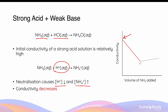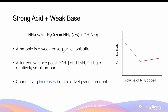When the titration reaches the equivalence point — when all the hydrogen ions have been neutralized — the conductivity reaches its minimum value. At this point, we only have ammonium ions and chloride ions. After the equivalence point, the addition of ammonia only increases the conductivity slightly, because ammonia is a weak base that undergoes only partial ionization, producing a small amount of hydroxide ions and ammonium ions. Despite this slight increase, we can still clearly identify the equivalence point by looking for the bottom of this V-shaped curve.